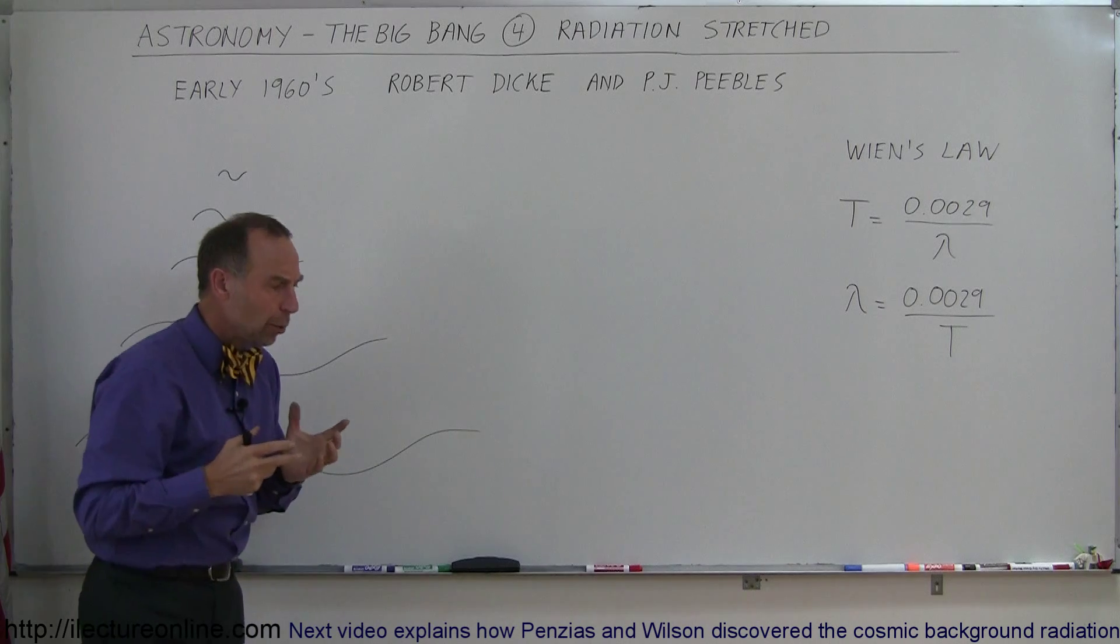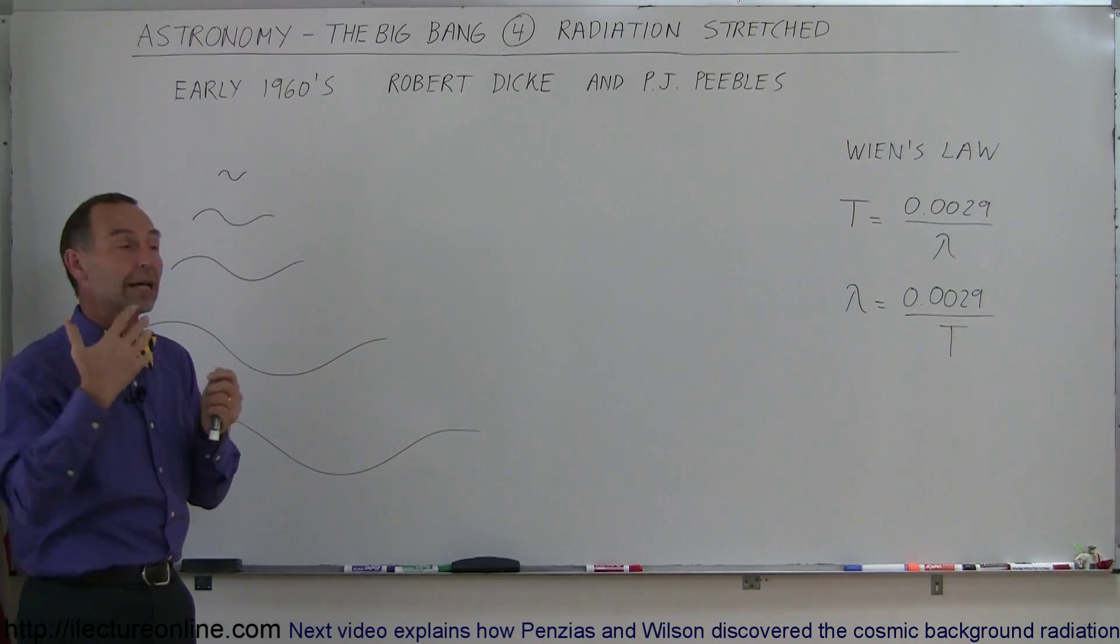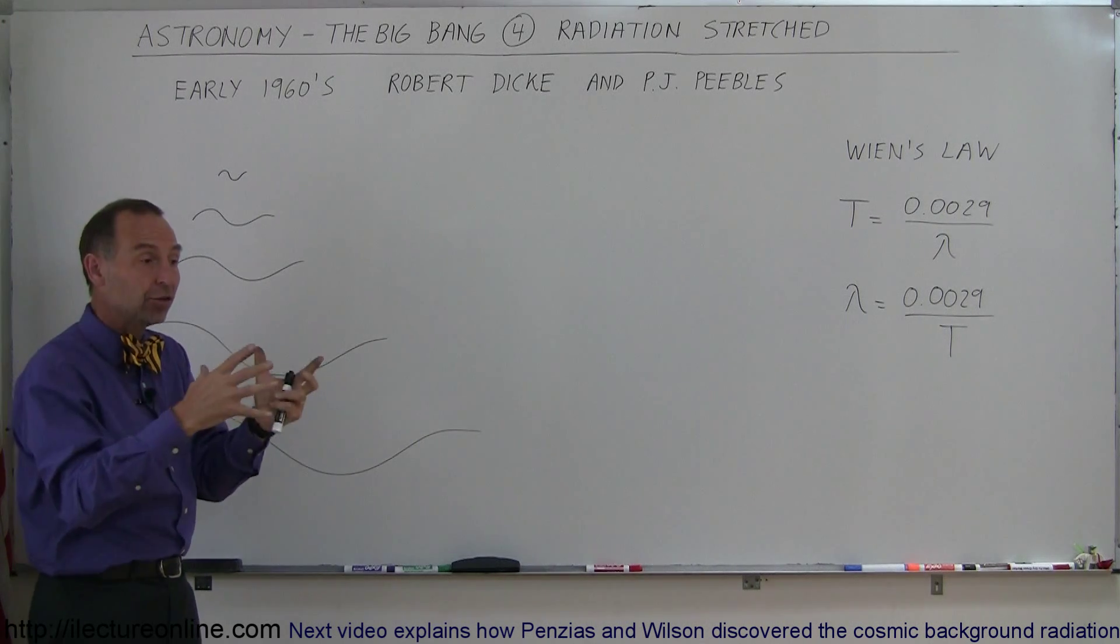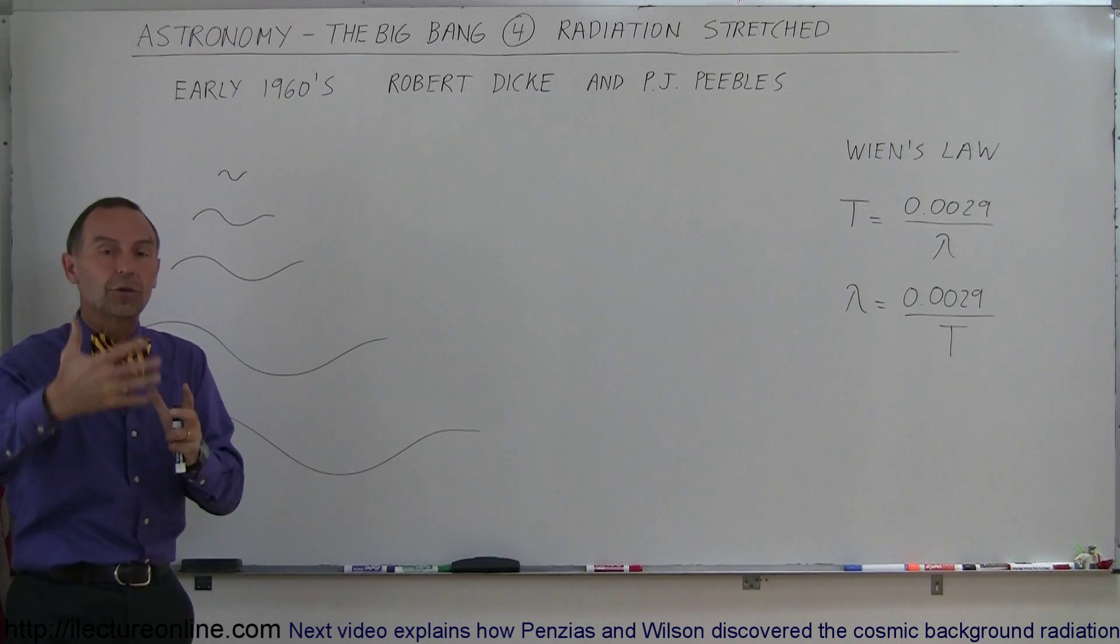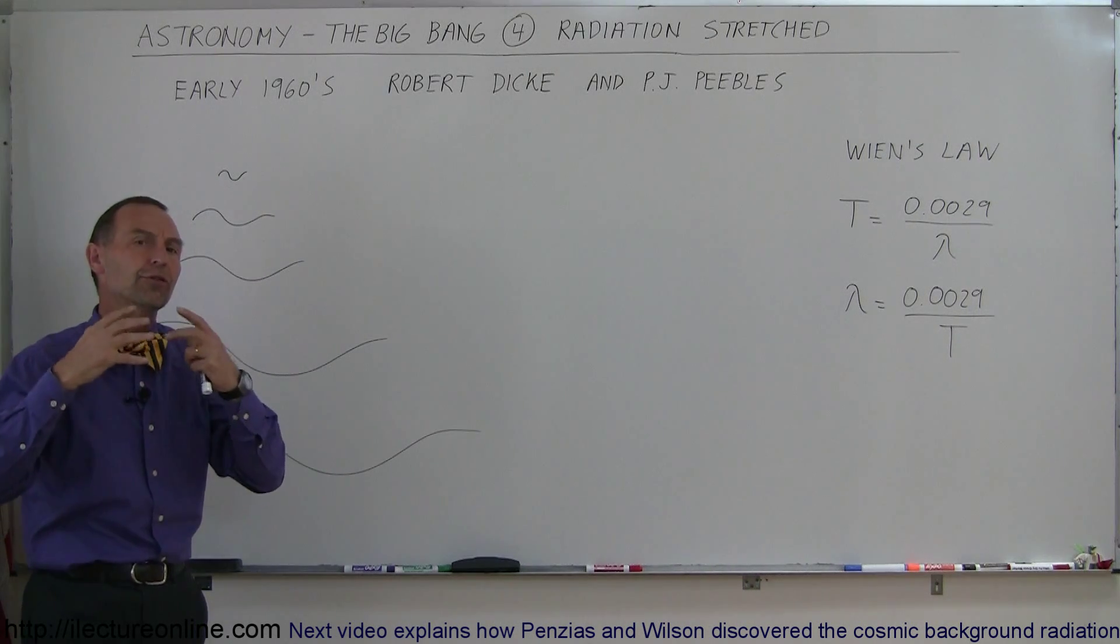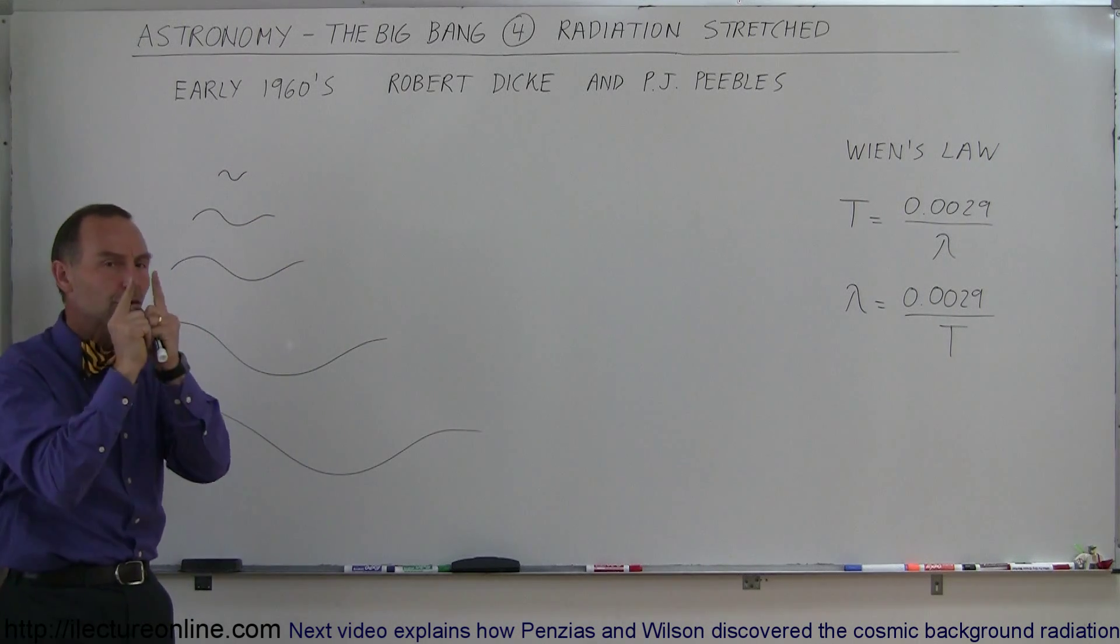So they began to think, if the early universe was really, really hot again, because of the idea that a large portion, 25% of all the hydrogen at the beginning of the universe, must have been converted into helium, and therefore the universe must have been very hot, and if the universe was very hot, there must have been very high energy radiation at very short wavelengths.